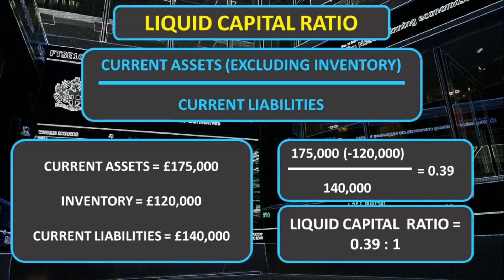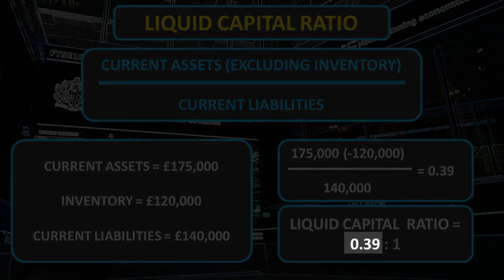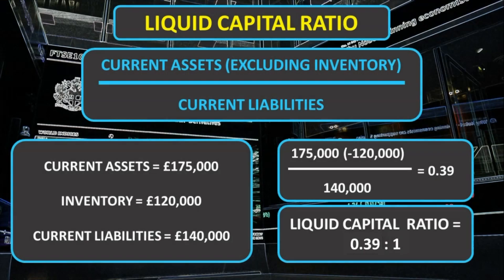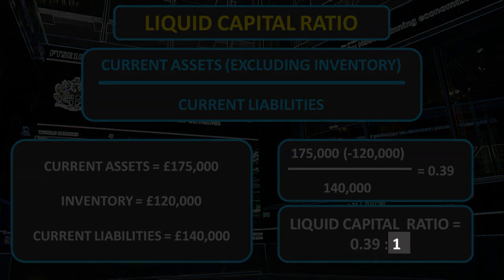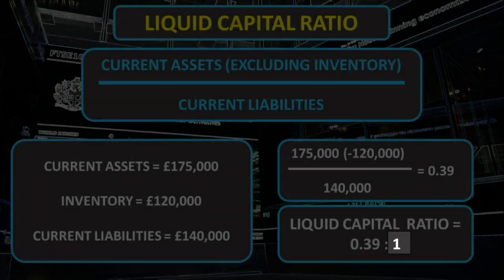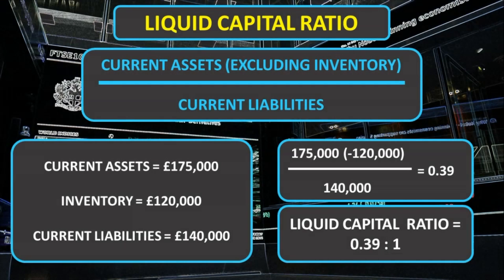This example shows that Business Z is illiquid. It has less than half the amount of current assets excluding inventory for every liability, meaning it could struggle to pay short-term financial obligations without the sale of its inventory.